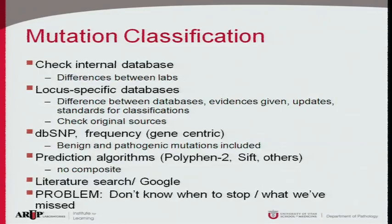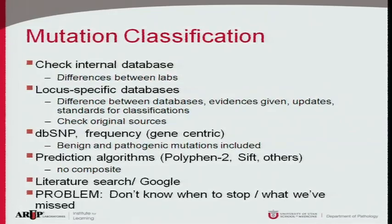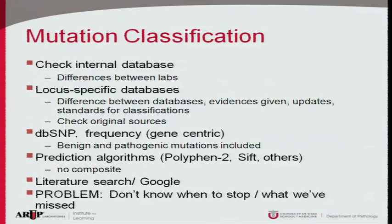I look at locus-specific databases including the Leiden Open Variation Database, but there are differences between databases — some are excellent and others only marginally useful. Issues include insufficient evidence provided, infrequent updates, and the need to check original sources, as Les pointed out.